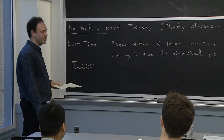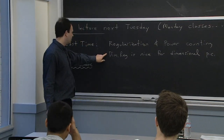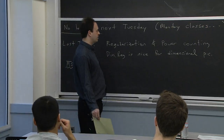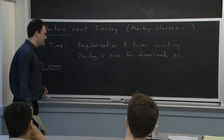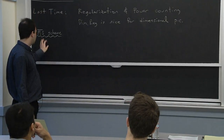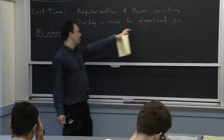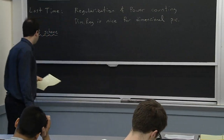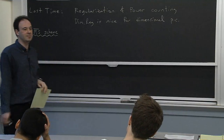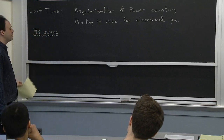Last time we were talking about regularization and power counting. In particular, we argued that there are some things that are nice about dimensional regularization when you're doing dimensional power counting, which is what we've been discussing so far — power counting and ratios of mass scales. I want to continue along that theme today, and in particular, move towards really talking about matching calculations in the context of massive particles.